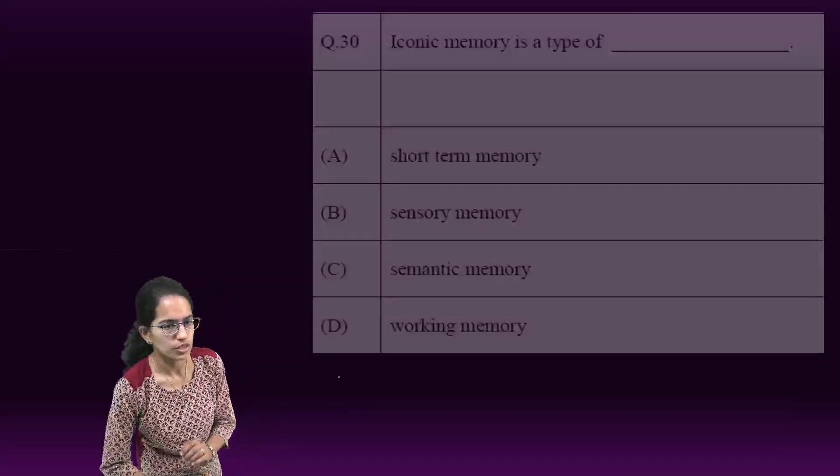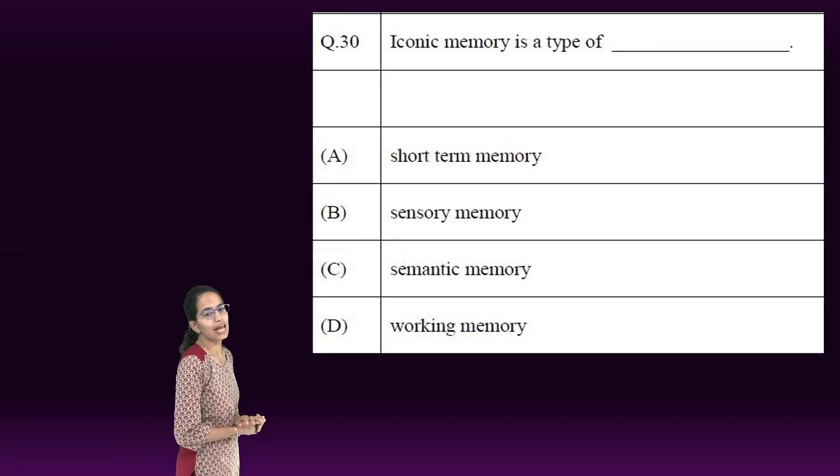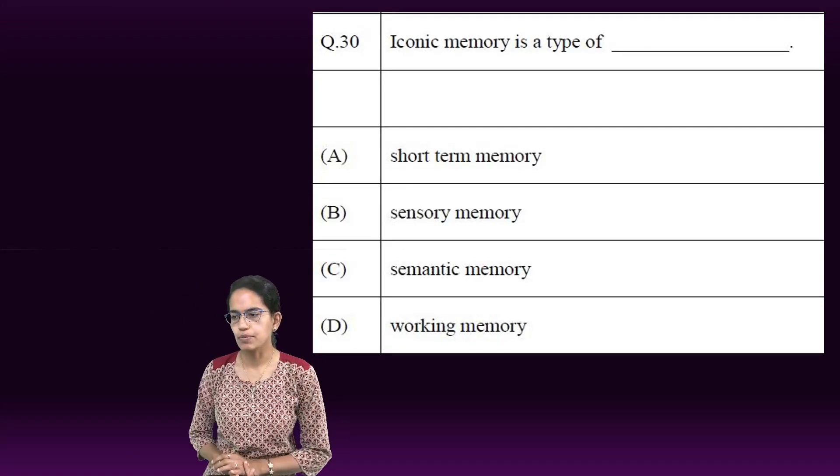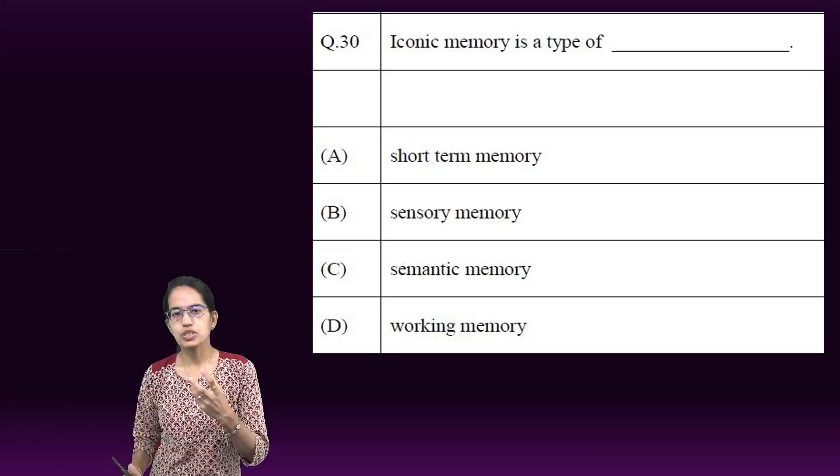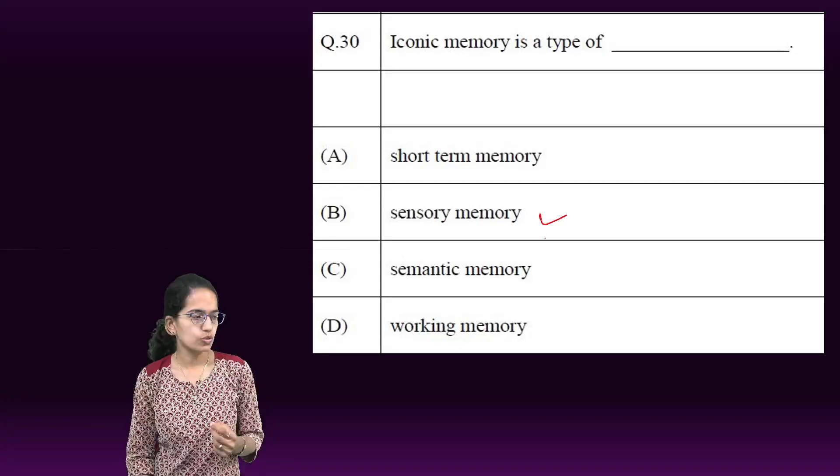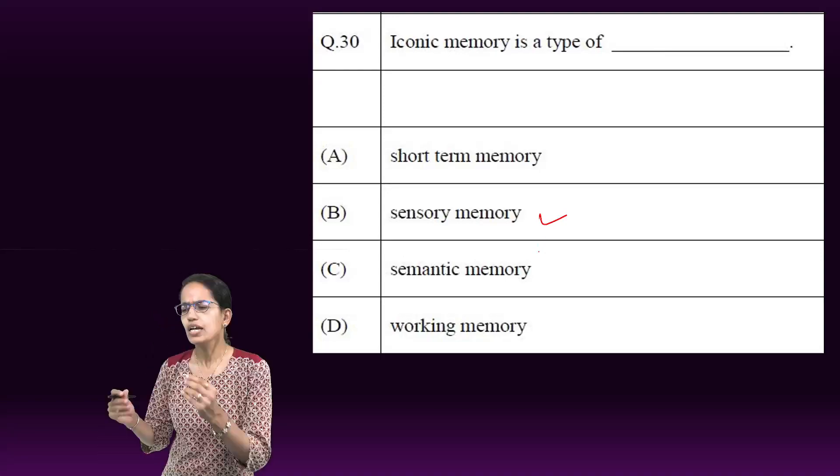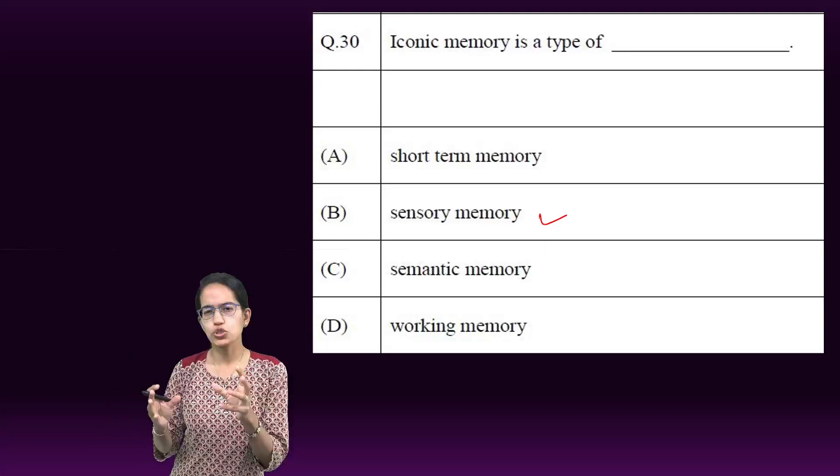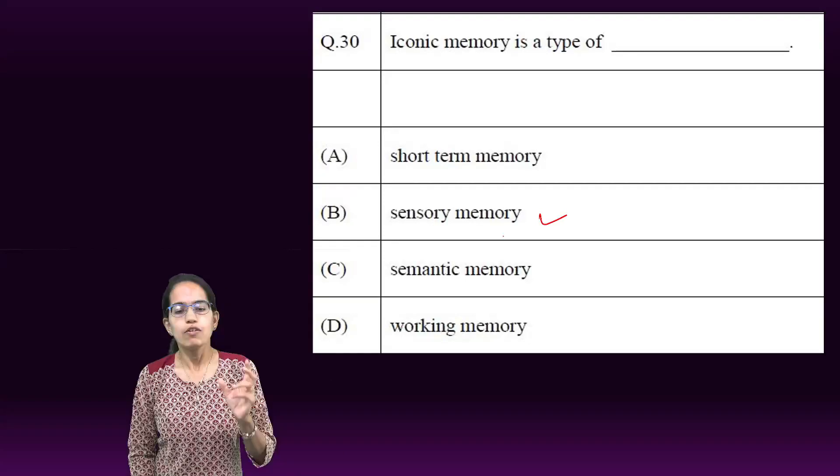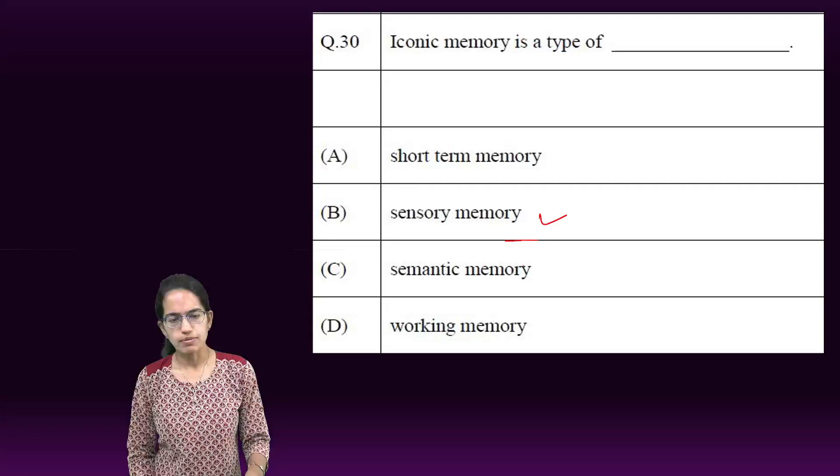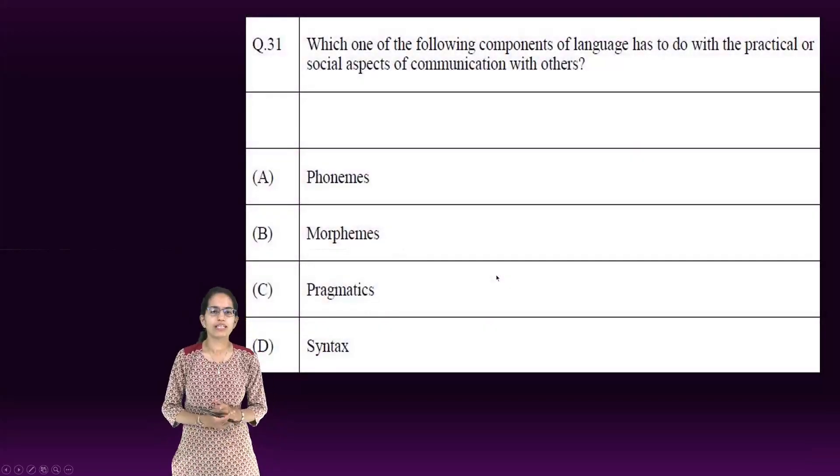The next question is iconic memory is a sensory memory. Visual memories are used to describe the sensory memories which are produced in the sense of light, and this is what is called iconic memory. These are extremely short-lived visuals and they are just quick captures of things in memory for a very small duration of time. So sensory memory becomes the right option.